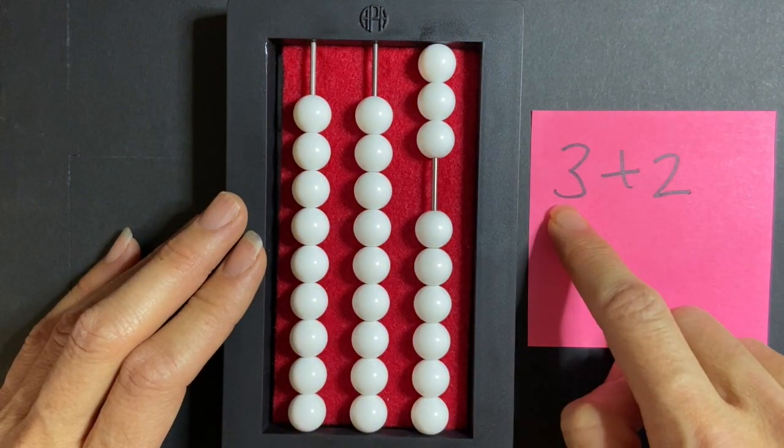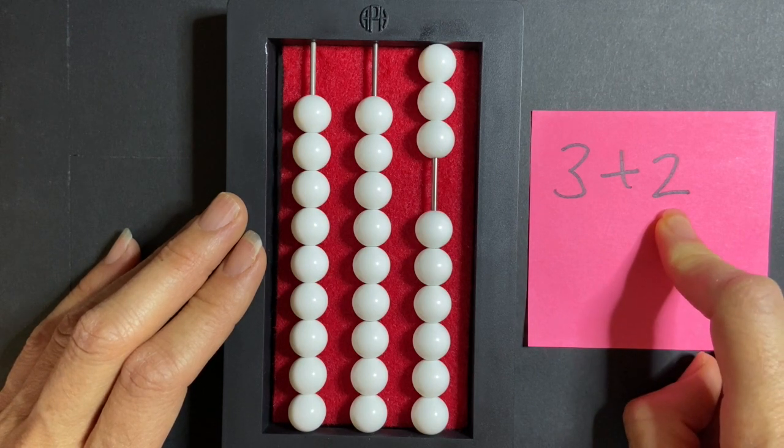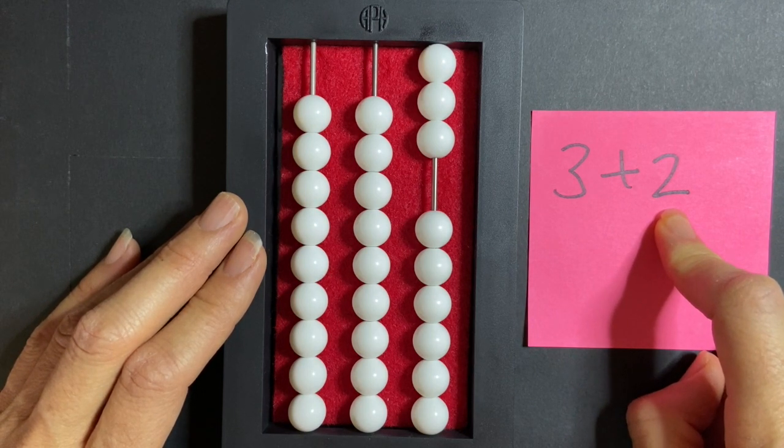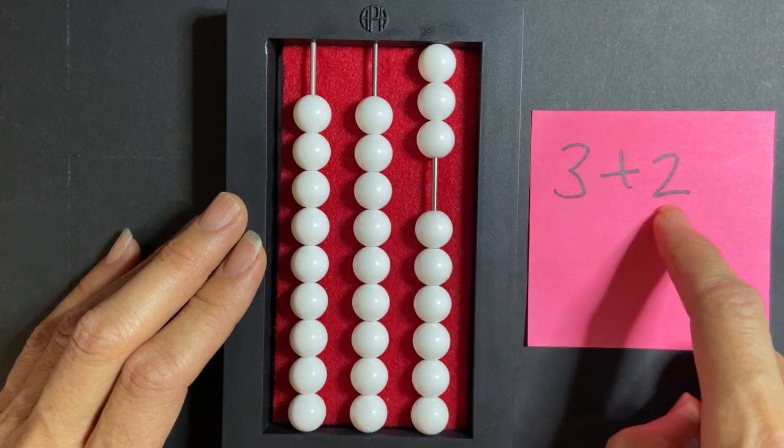In order to do that, I push two more beads up in my ones column on my abacus, and I count each bead as I push them up: one, two. So I have 3 plus 2.